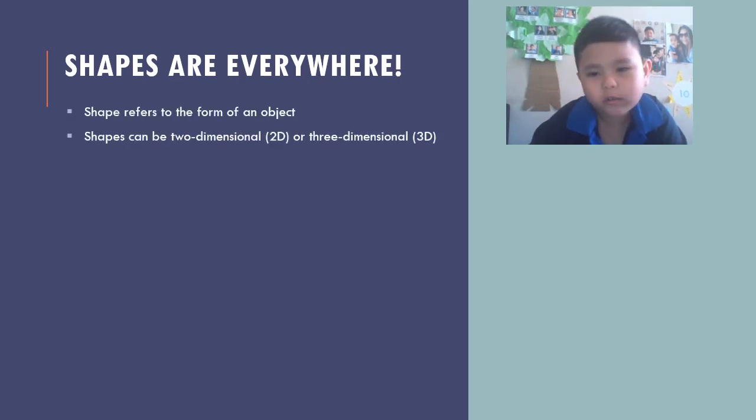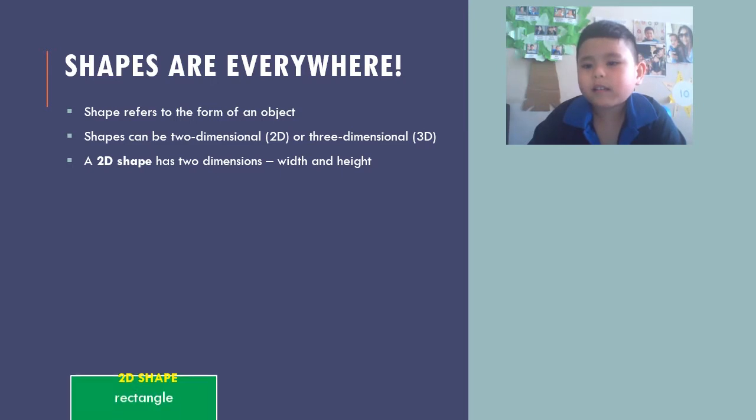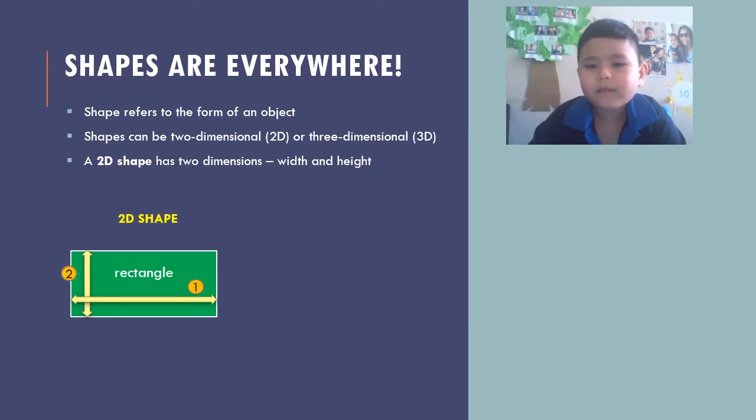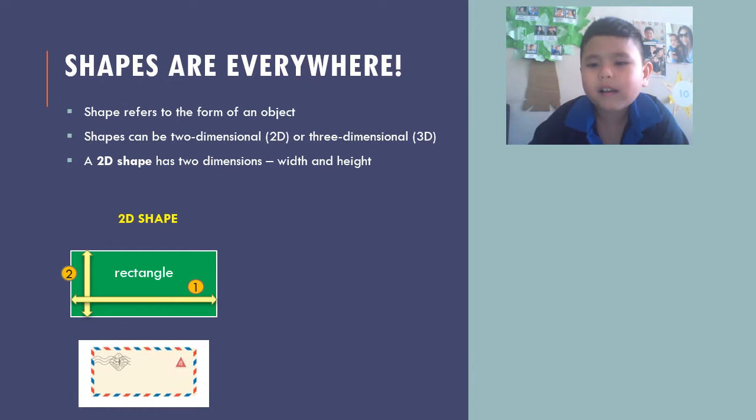It can be two-dimensional or three-dimensional. A two-dimensional shape has two dimensions. It has width and height. For example, a rectangle is a 2D shape. This mail envelope is a rectangle.